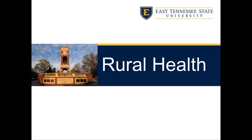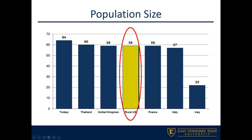We're going to pick up with rural health where we stopped in class and finish out this last section talking about the second population sect we were going to cover. The first one was mental health. The book does go over a lot of different types of special populations and their health needs, but these are the two we're going to focus on for purposes of the class. Be aware that you are responsible for the information covered in the text.